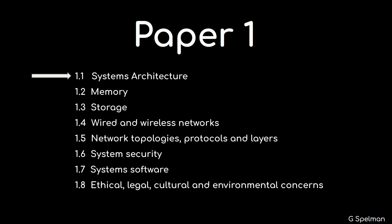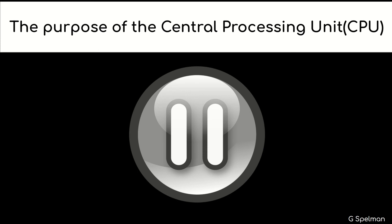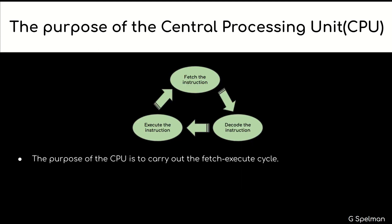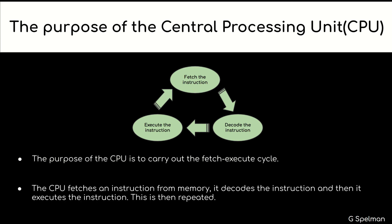This video focuses on Systems Architecture, which is Topic 1 of Paper 1. Here is the list of bullet points for Systems Architecture. Let's get started. The purpose of the central processing unit: the CPU is to carry out the fetch-execute cycle. The CPU fetches an instruction from memory, it decodes the instruction, and then it executes the instruction. This is then repeated.